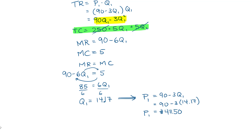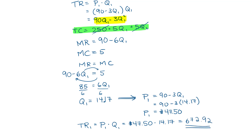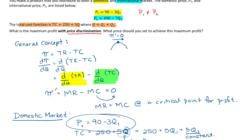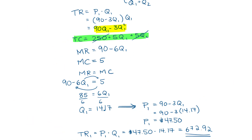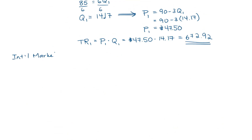That's the price P1 that maximizes the domestic market. We can further determine the revenue from this domestic market: TR1 equals P1 times Q1, which is 47.50 times 14.17, giving us 672.92. Now we're going to examine our international market, which has the price equation P2 equals 490 minus 7Q2.